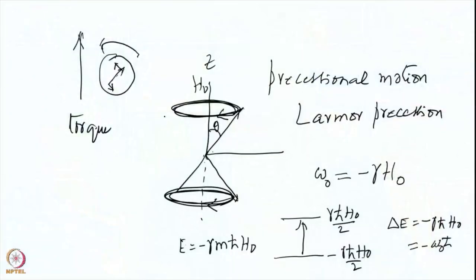The energy separation between the two levels, in terms of frequency, corresponds exactly to the Larmor precessional frequency. This is a very important concept for understanding resonance absorption. When executing this motion, all spins — whether in the alpha or beta state — go in the same clockwise direction. The negative sign indicates clockwise motion; conventionally, anticlockwise motion is positive and clockwise is negative.